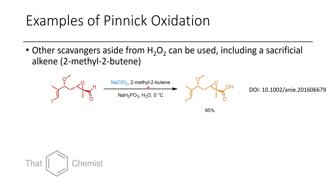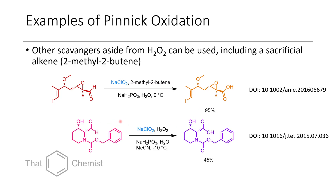Sometimes people use scavengers such as 2-methyl-2-butene, which will also react with any free chlorine that might form from hypochlorite. In one example, a very complex vinyl iodide containing several stereocenters as well as an epoxide is used, and the only functional group that undergoes conversion is the carboxylic acid — in 95% yield. It's also worth noting that they did an in-situ preparation of this aldehyde using a DMP oxidation from the alcohol, making a 95% yield over two steps quite impressive. Another example shows an alcohol-containing aldehyde where the alcohol remains intact while the carboxylic acid is formed.